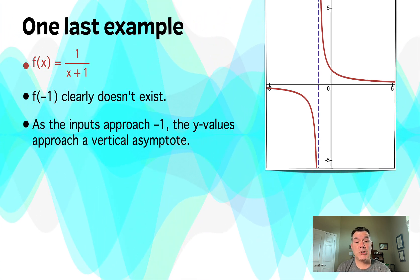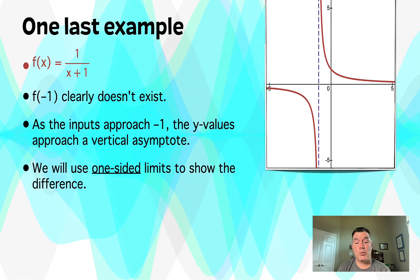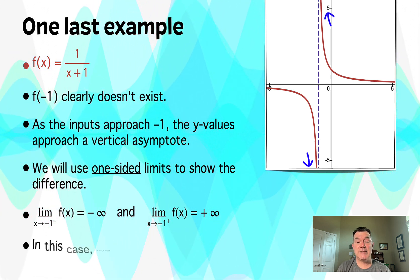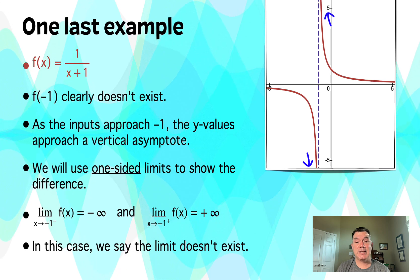So as we approach negative 1, the y-values are approaching that vertical asymptote. But using one-sided limits, we can be more specific and say that as we approach negative 1 from the left, f(x) is approaching negative infinity. And as we approach negative 1 from the right, f(x) is approaching positive infinity. So again, because of that, we can say that the limit doesn't exist.